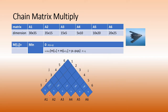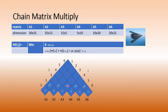Next we fill in chains of length two. For A1×A2, i=1 and j=2, the number of operations is 30×35×15. You write that value in and continue for A2×A3, A3×A4, A4×A5, and A5×A6. Since there is no commutativity, this level is fairly straightforward to compute.